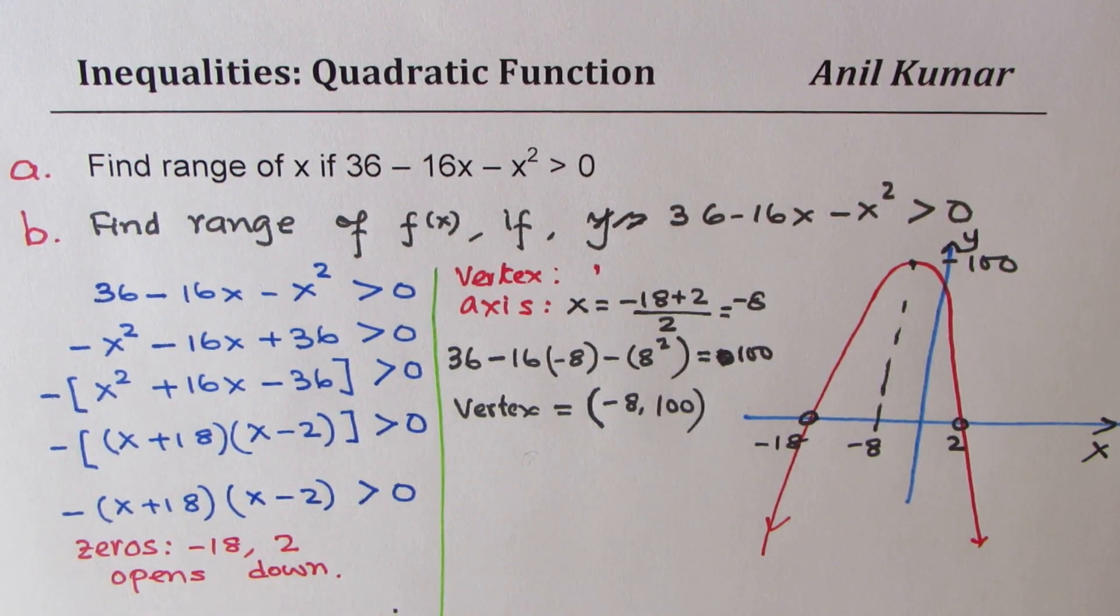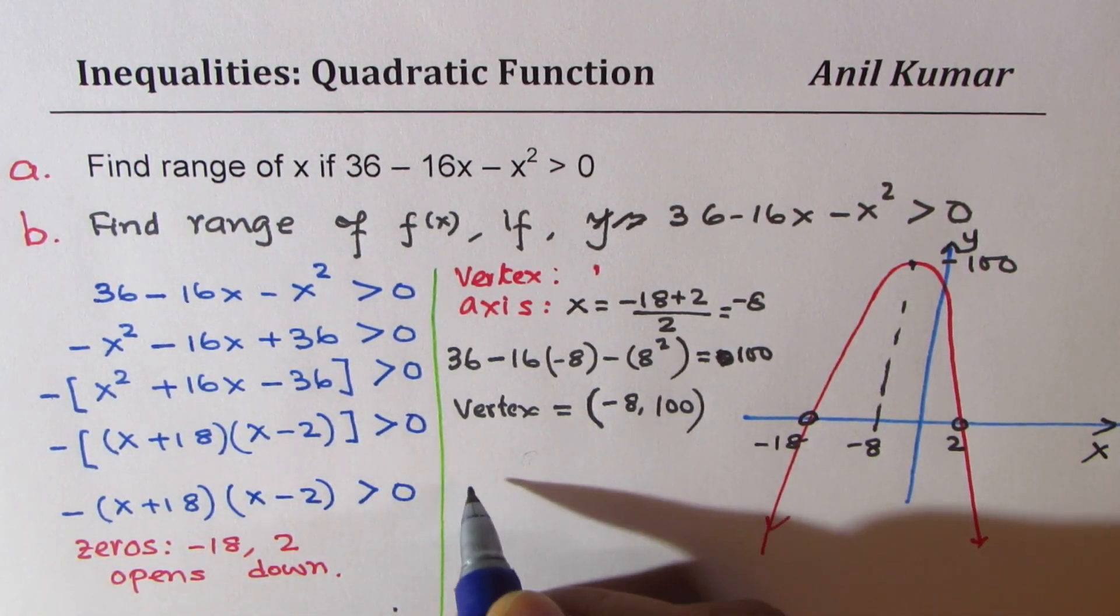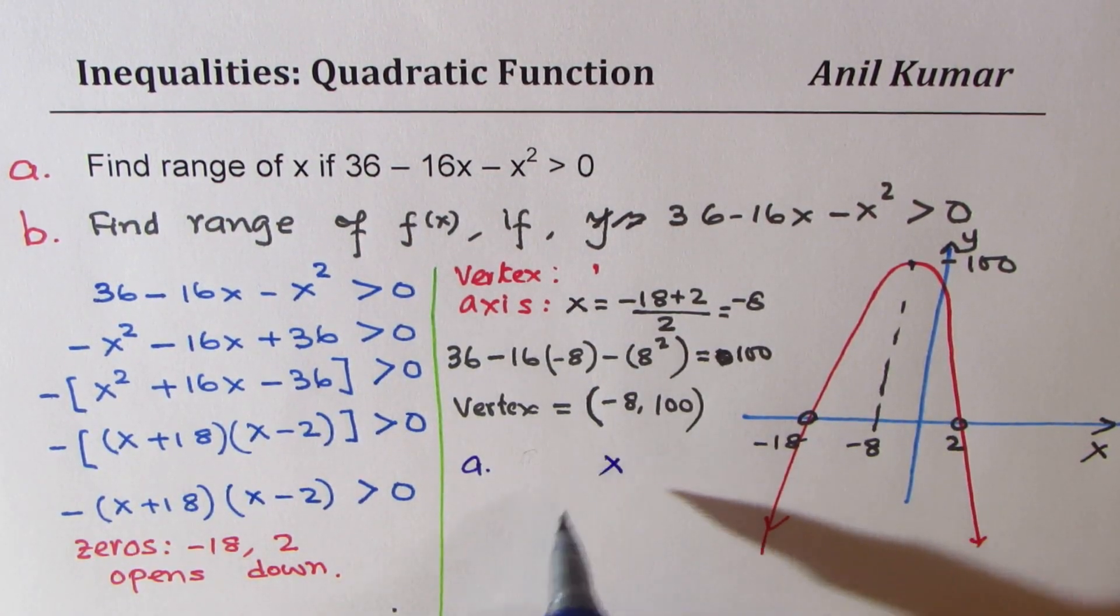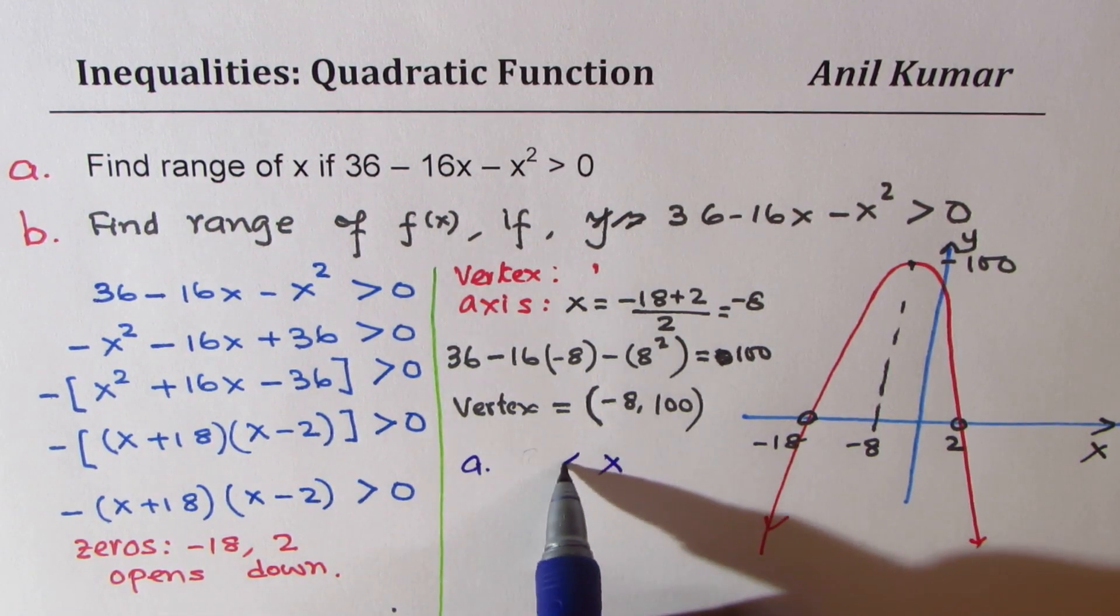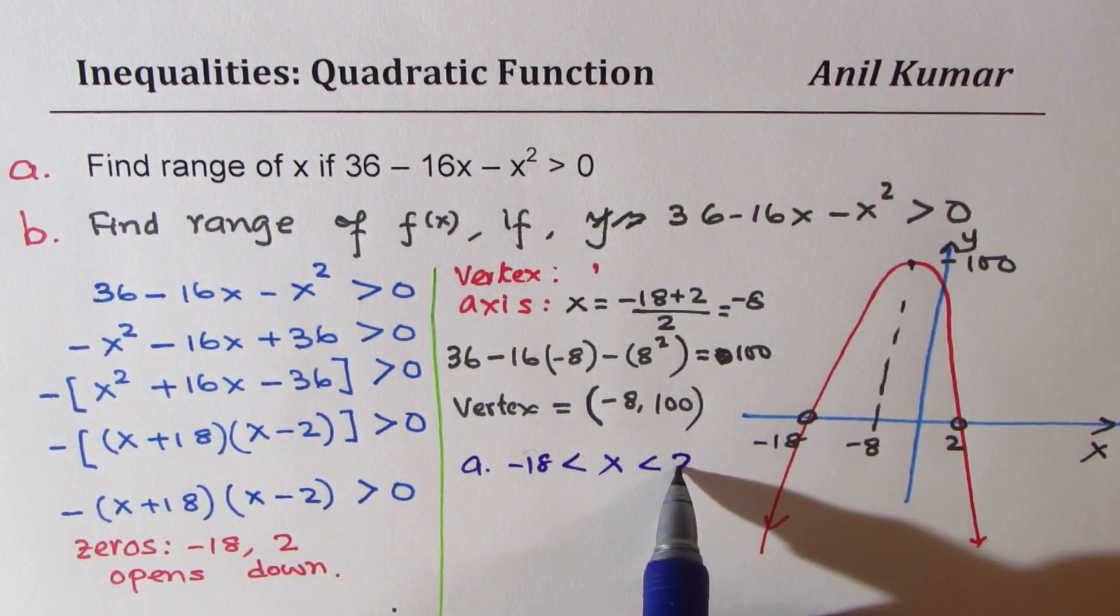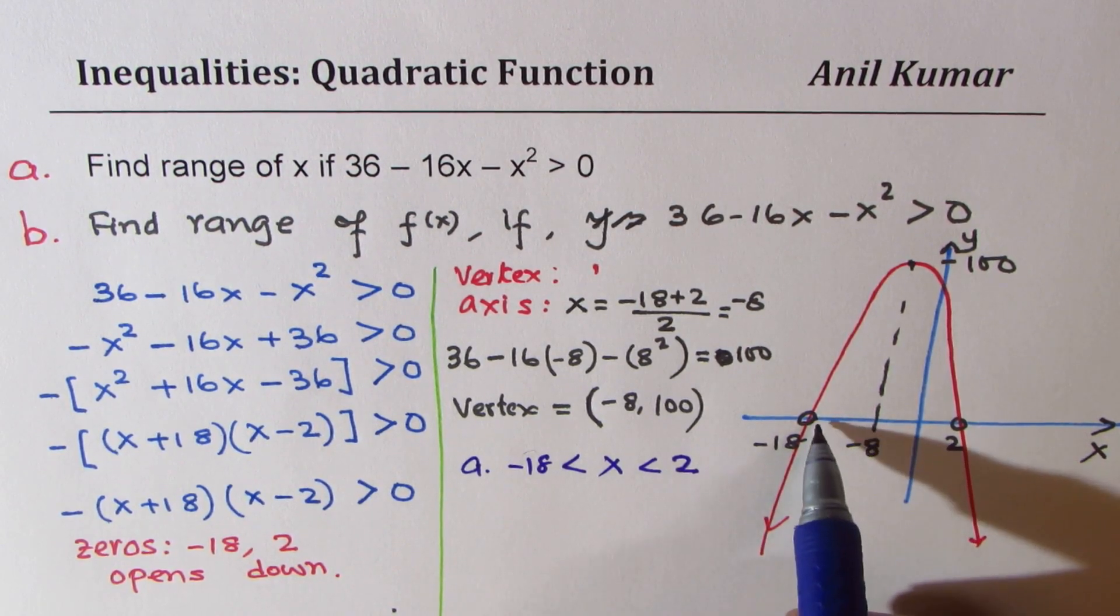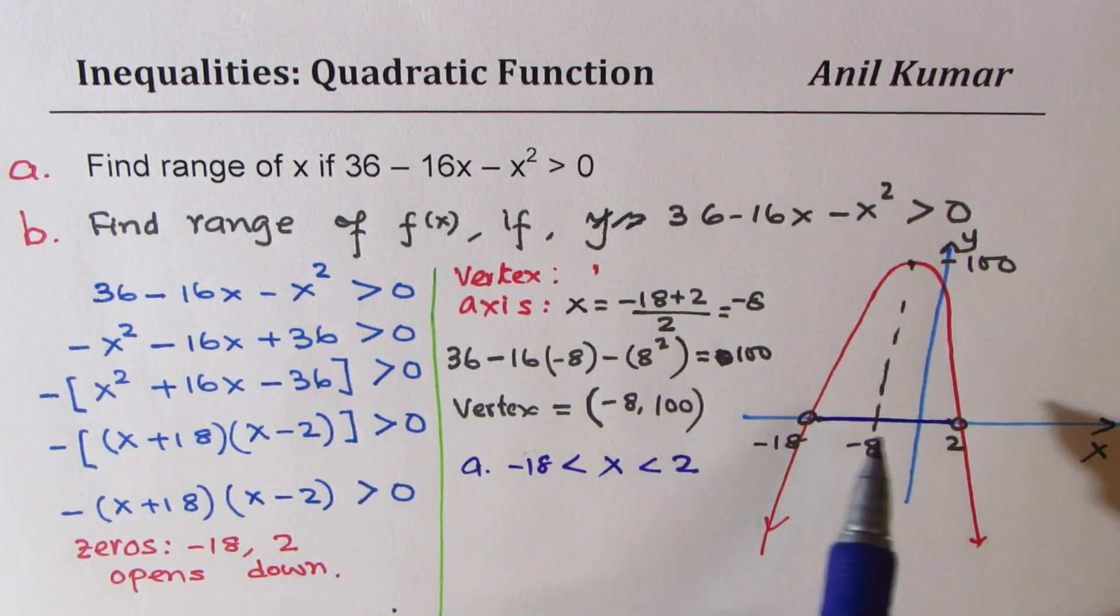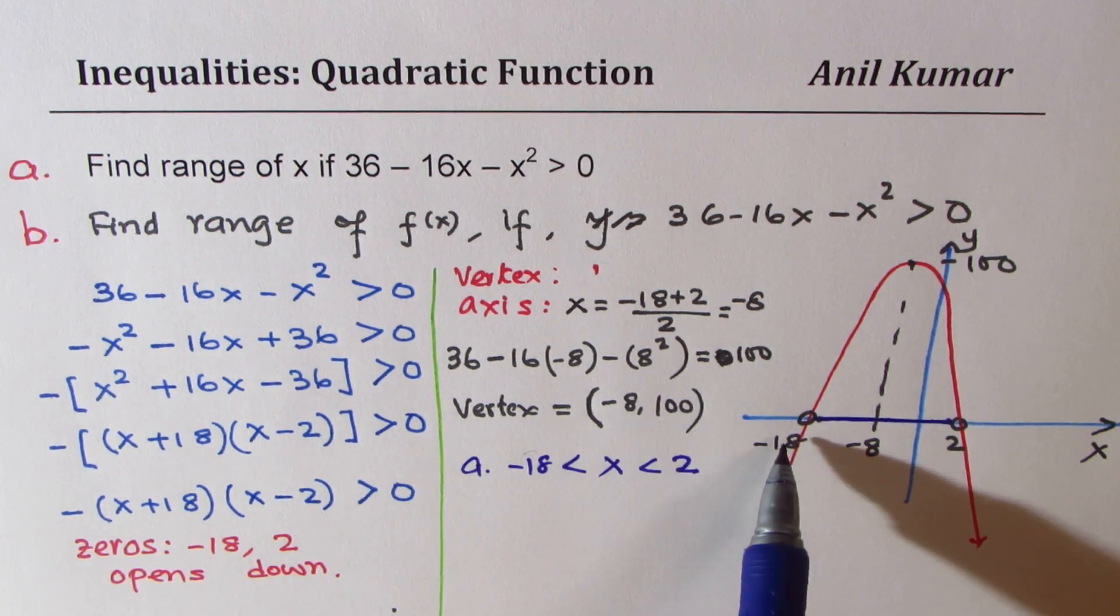Now, let's write down the solutions. Part A, which is range of x. That is to say, x will be between the values minus 18 and 2. That is the range of x. All possible values between minus 18 and 2.